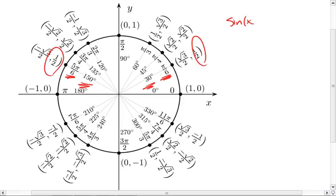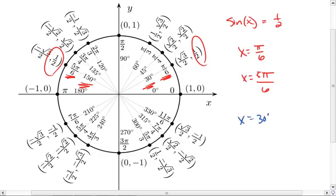So if sine of x equals 1 half, then x must be either pi over 6 or 5 pi over 6, or if you are more comfortable in degrees, it's 30 degrees or 150 degrees.